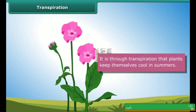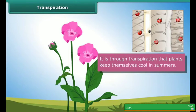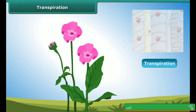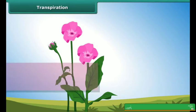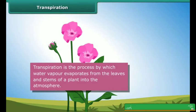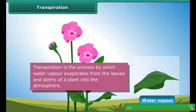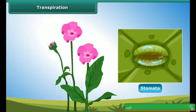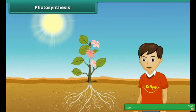Next is transpiration. It is through transpiration that plants keep themselves cool in the summer season. The process by which water vapour evaporates from the leaves and stems of a plant into the atmosphere is known as transpiration. This transpiration process occurs from the stomata of the leaf.